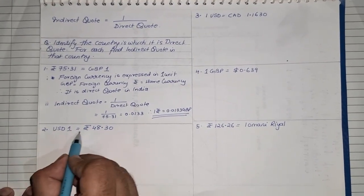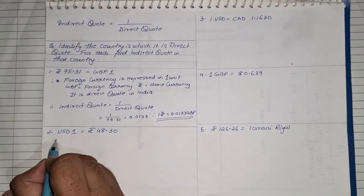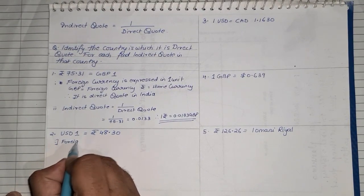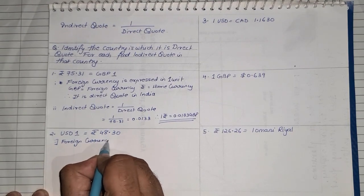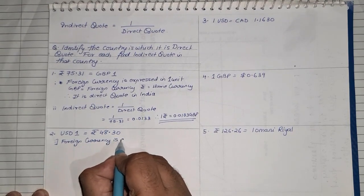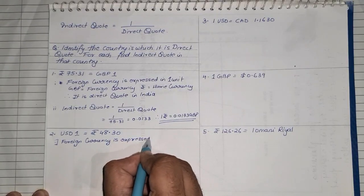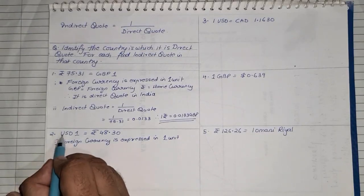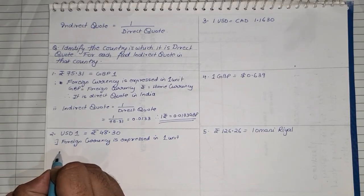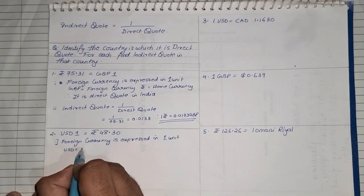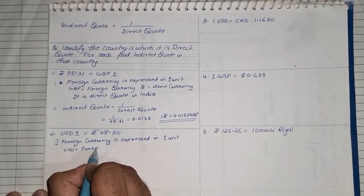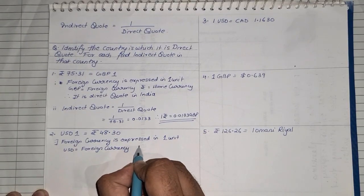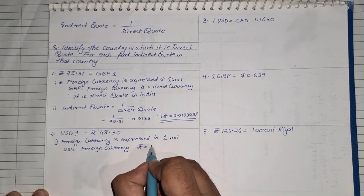Let us try using the same rule for the second sum: 1 USD is equal to rupees 48.30. Again, foreign currency is expressed in one unit. In this statement, USD is one unit, so USD will be my foreign currency and rupee will become my domestic currency.